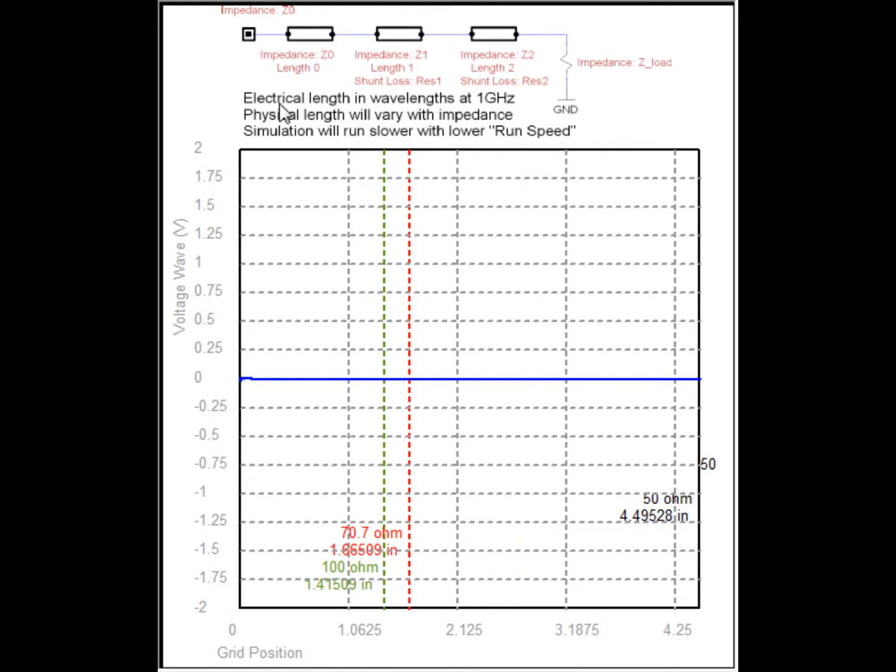So I'm going to inject my Gaussian pulse, and you're going to see that this time, as I'm going from the higher impedance to the lower impedance, the amplitude is going to be the same in the reflection from before, but the sign is going to change. So we flipped over, we're at negative pulse now.